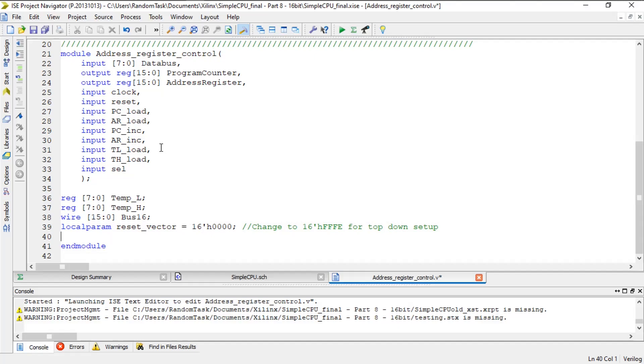Next is the usual always block to catch the clock or reset edges, and as before the reset will have priority. Here the program counter and address register are reset to the reset vector, in this case 0.